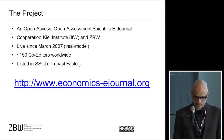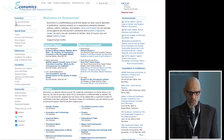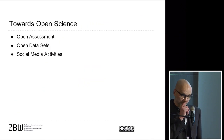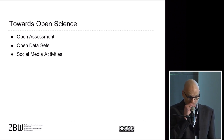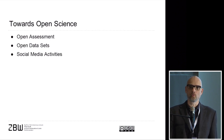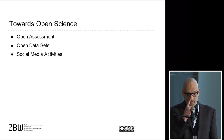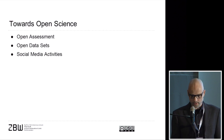If you take a look at the URL EconomicsE-Journal.org, you are welcomed with a picture that looks awesome. I will come to the three points I've mentioned which can be seen as small steps towards open science: namely, open assessment, open data sets — where research data is also published — and our social media activities.